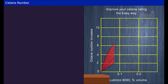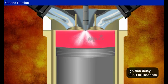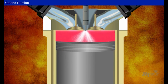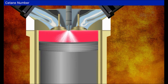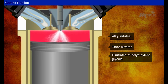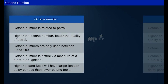Cetane improvers are compounds which readily decompose to give free radicals, thus enhancing the rate of chain initiation in diesel combustion. Cetane improvers promote fast oxidation of fuels and improve their ignition characteristics. Chemical compounds such as alkyl nitrates, ether nitrates, dinitrates of polyethylene glycols, and certain peroxides are well-known cetane improvers. Observe the table for the difference between octane number and cetane number.